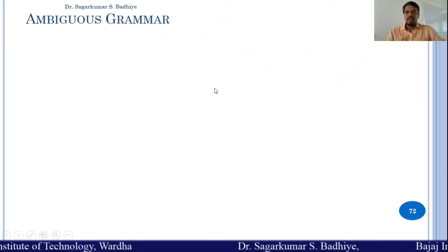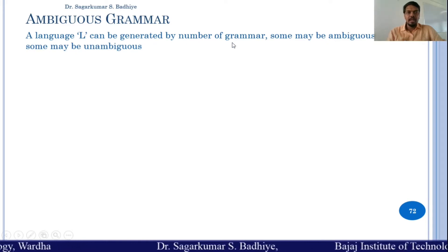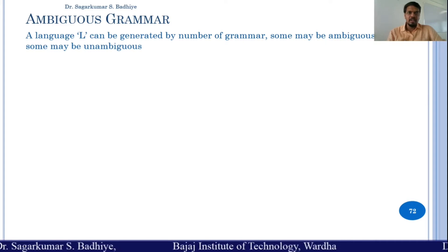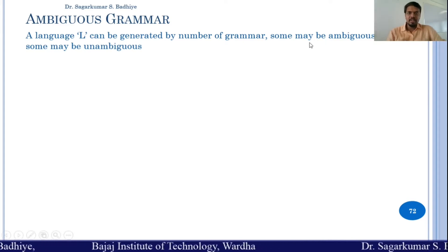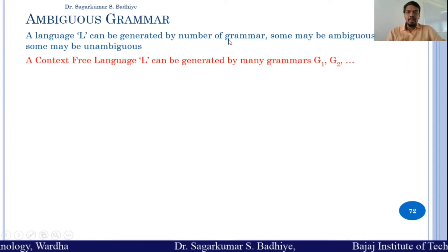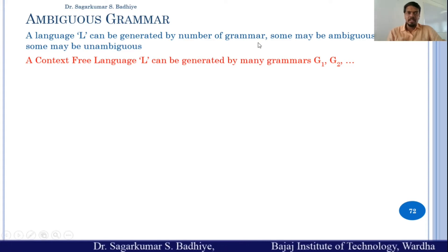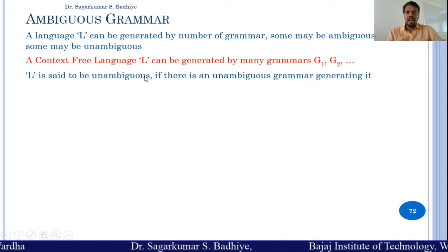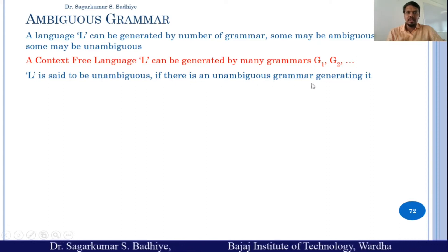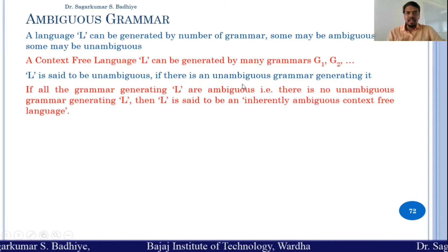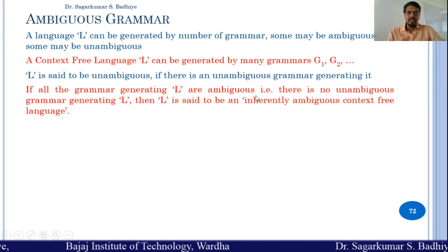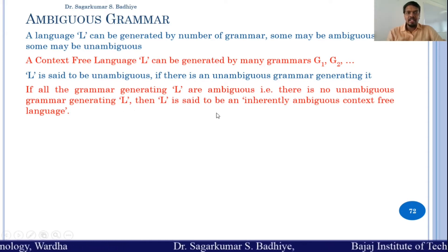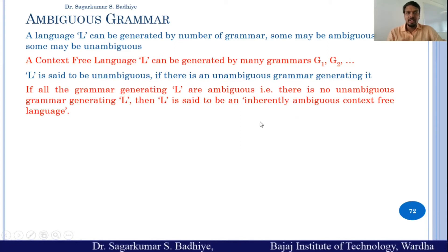A language L can be generated by many grammars; among those, some may be ambiguous and some may be unambiguous. A context-free language is said to be an ambiguous language if there exists an unambiguous grammar generating it. If all grammars generating L are ambiguous — that is, there is no unambiguous grammar for L — then L is said to be an inherently ambiguous context-free language.